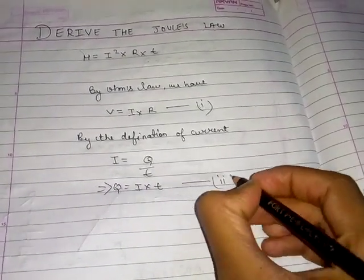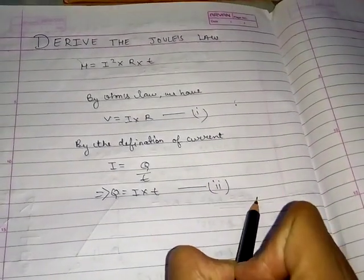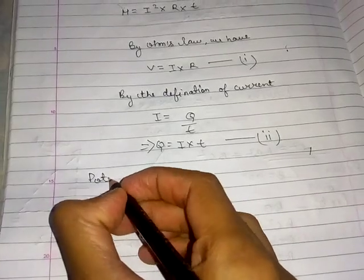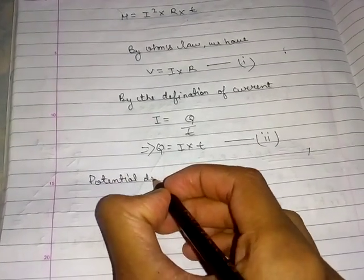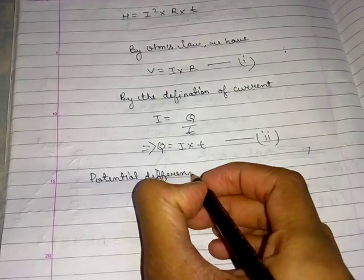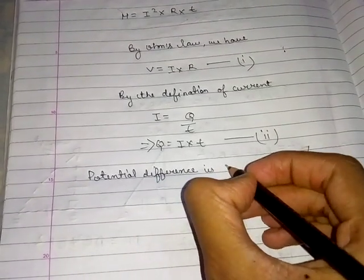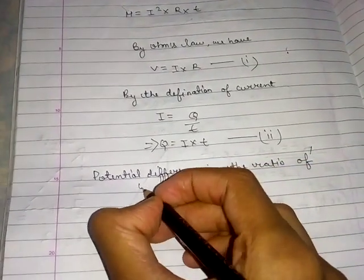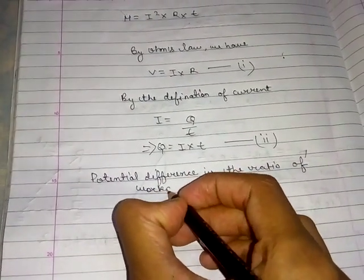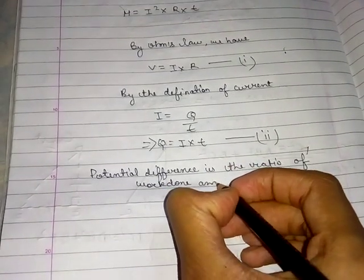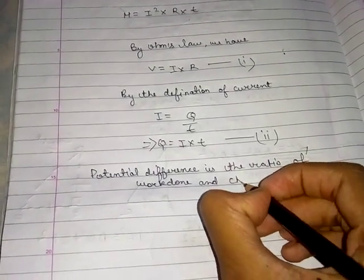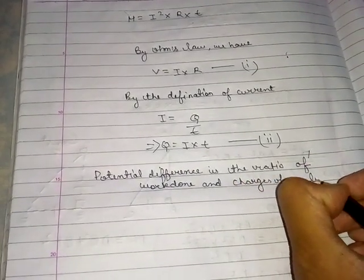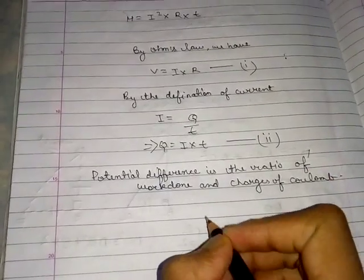We have equation 1 and equation 2. Now, potential difference is the ratio of work done and charge per coulomb.